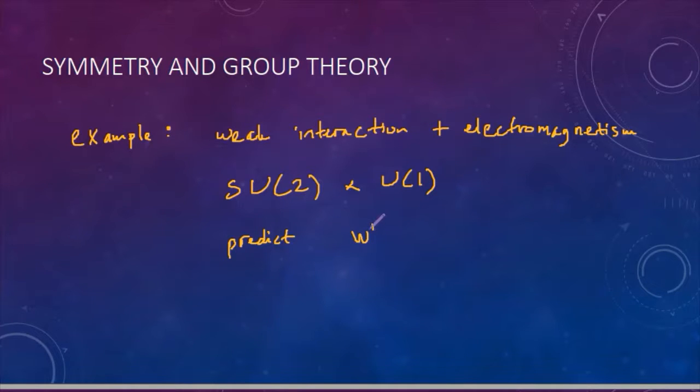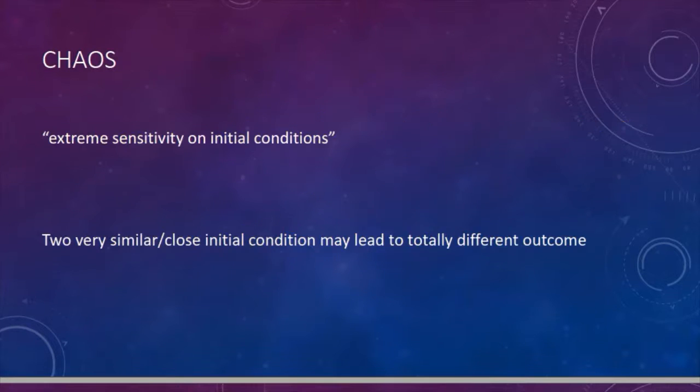There is also a chaotic system when you have a complete knowledge of how it works. You have this equation describing the phenomena, but if the initial condition changes by little, the outcome may change by a lot. Uncertainty can grow exponentially.